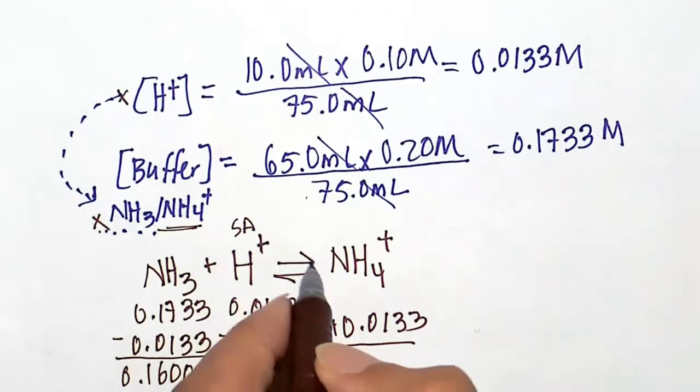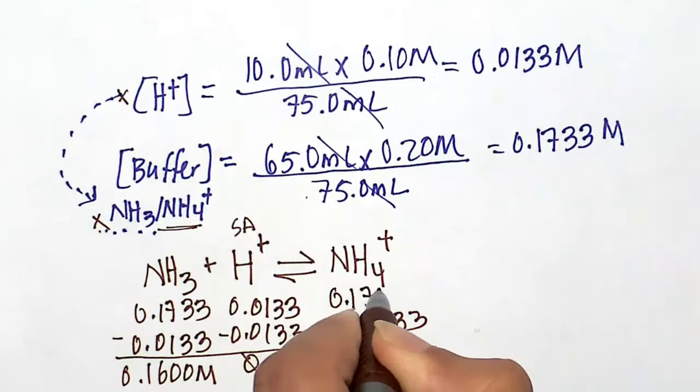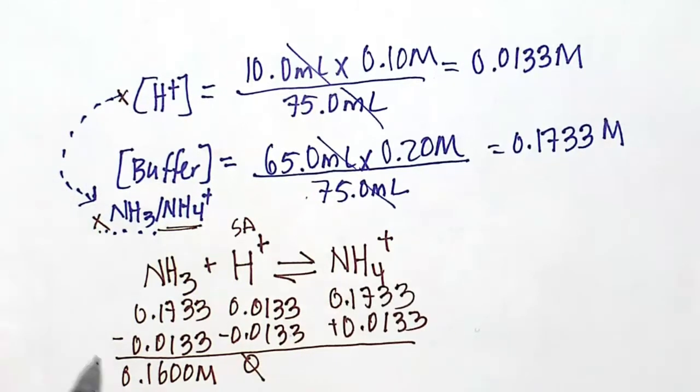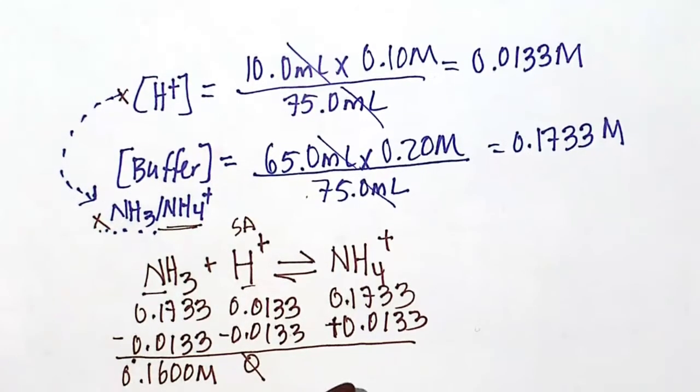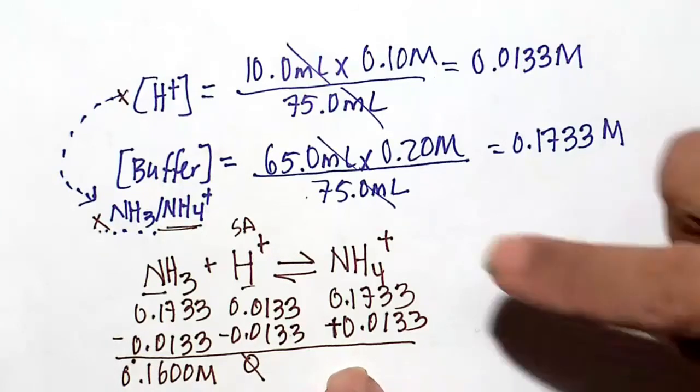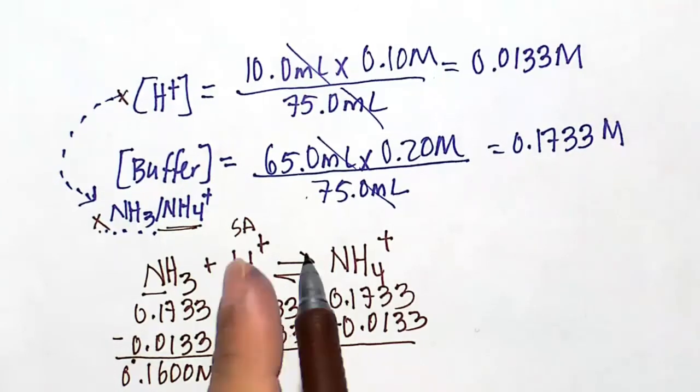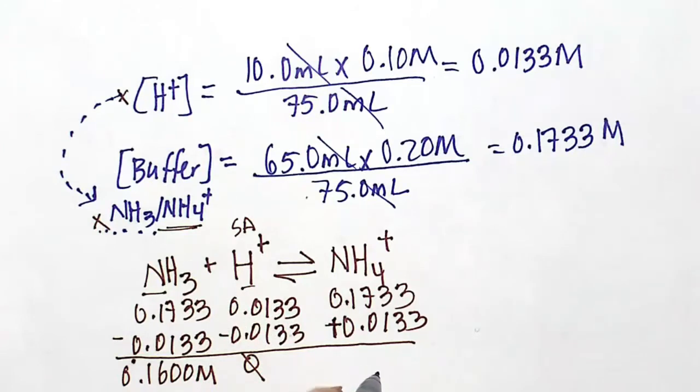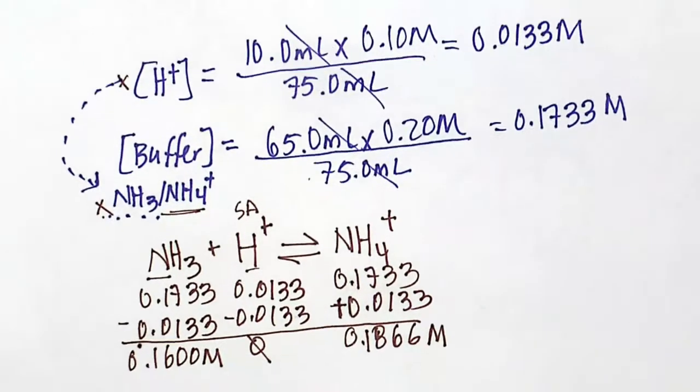So 0.1733 minus 0.0133, doing that subtraction is 0.1600. Concentration of NH4+, don't forget that's part of our buffer, is 0.1733 initially. We have this buffer that's equal concentrations of NH3 and NH4+ after the equilibrium, and then after the reaction of the strong acid where all of the proton is going to get consumed, the NH4+ ammonium ion concentration will be 0.1733 plus 0.0133, which is about 0.1866 molar.